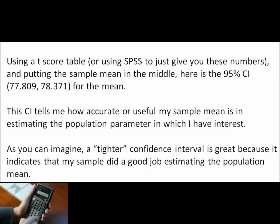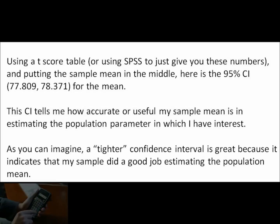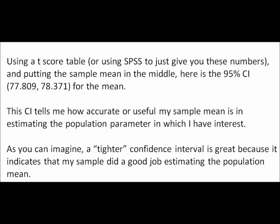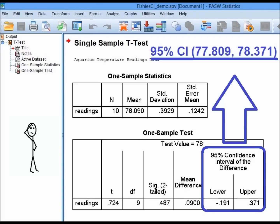So between 77.8 and 78.4, the mean temperature in the aquarium is probably in that interval. That sounds like a tight confidence interval, and this looks promising for the health of my fish. A tighter confidence interval indicates that my sample did a good job estimating the population mean.